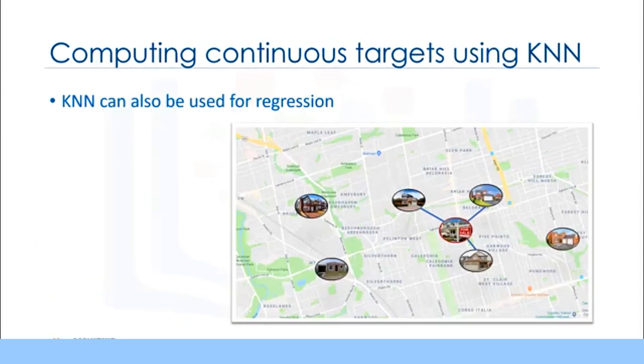Nearest neighbors analysis can also be used to compute values for a continuous target. In this situation, the average or median target value of the nearest neighbors is used to obtain the predicted value for the new case. For example, assume that you are predicting the price of a home based on its feature set, such as number of rooms, square footage, the year it was built, and so on.